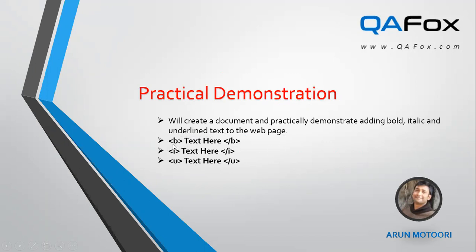For adding bold text, we need to use the starting b tag and ending b tag — that is b tag and slash b — and in between, the text you want to display in bold should be provided. For italic, use the i tag and slash i tag; whatever text you provide between these italic tags will be displayed as italic text. For underlined text, you use the u tag — starting u tag and ending u tag — and between that you provide the text that needs to be underlined and displayed on the page.